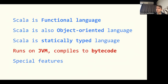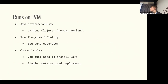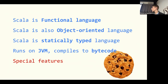The fourth statement: Scala runs on the JVM and compiles to bytecode. This gives us Java interoperability out of the box — we can use the Java ecosystem, which is really important. It also gives us cross-platform support, so we don't need to install anything extra, only the JVM, which simplifies deployment procedures as well.